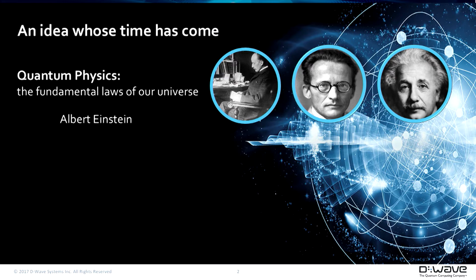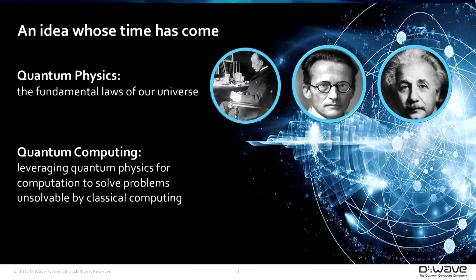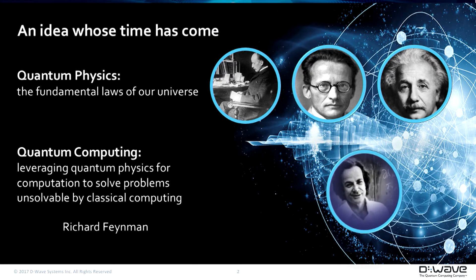Einstein said entanglement — one of the things we use on our computers, where we can cause our quantum bits or qubits to become entangled so they can operate as a unit rather than as individual bits — Einstein said he didn't really believe in that spooky interaction at a distance. But in fact it's been proven that it works. What we're trying to do is use physics to do something useful in computing.